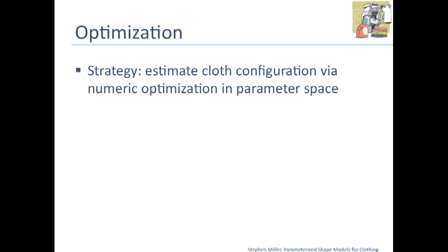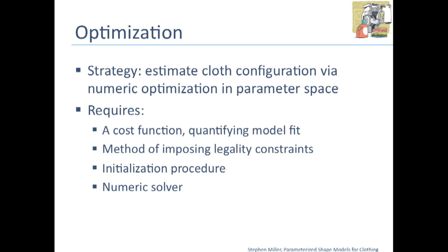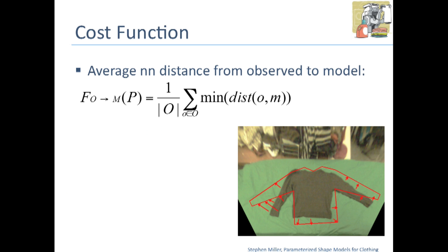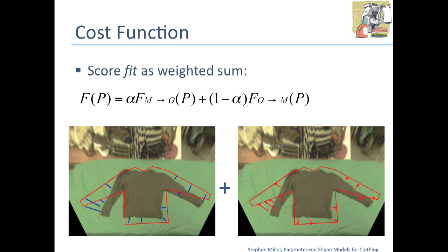For the optimization strategy, we want to estimate the clothing configuration by doing numeric optimization over the parameters. This requires a cost function to quantify the fit of the model. The cost function has two terms: the average nearest neighbor distance from the model contour to the observed contour, and likewise, the distance from the observed contour to the model contour. Our total fit is scored as a weighted sum of these two terms. In practice, we found an alpha value of 0.5 worked well, but it tended to be fairly robust to variations in alpha.